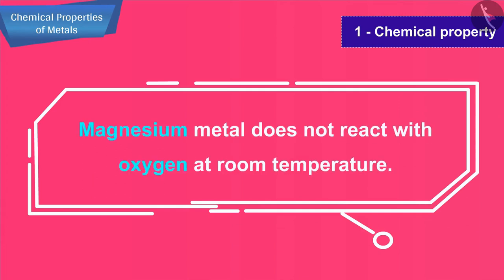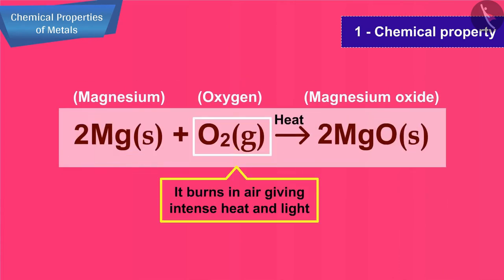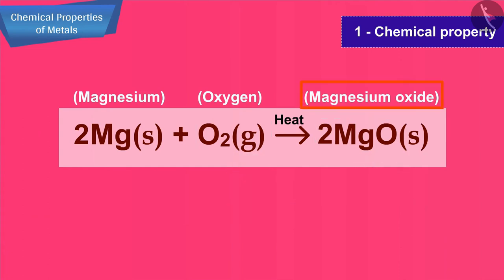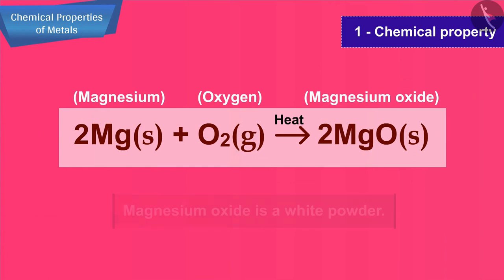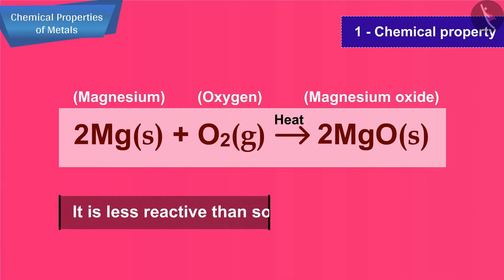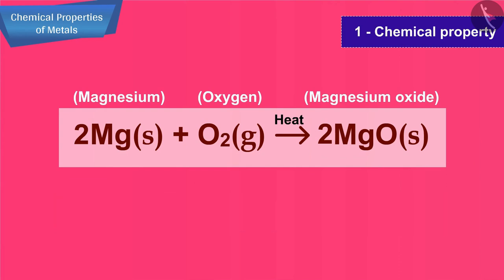For example, sodium oxide is soluble in water and dissolves to produce sodium hydroxide, which is an alkali. Magnesium metal does not react with oxygen at room temperature, but on heating it burns in air giving intense heat and light to form magnesium oxide, a white powder. Since it requires heat, magnesium is less reactive than sodium and potassium.